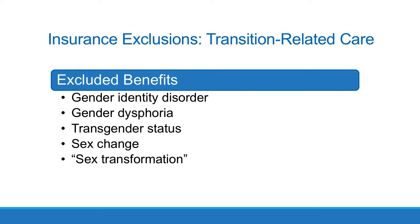Insurance exclusions — transition-related care. As a result, the industry standard was to include a section in the excluded benefits section of each insurance plan listing gender identity disorder, gender dysphoria, transgender status, sex change, and — my personal favorite — sex transformation, and all associated treatments as excluded from coverage. These blanket exclusions are coded into automatic claims processing programs to deny any claim with a diagnosis code for gender identity disorder, gender dysphoria, or transsexualism.